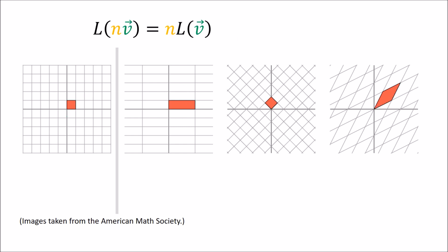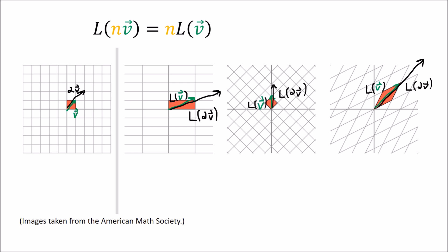The scaling rule works the same way: we can scale the input or the output and get the same answer. In the input space, we draw vector v in green and its scaled version 2v in black, then transform both according to the stretch, rotate, and skew. As you can see, the scaling rule is obeyed in the output space — scaling and then transforming gives the same result as transforming and then scaling. This abstract rule describes the same transformations we've been talking about all along.